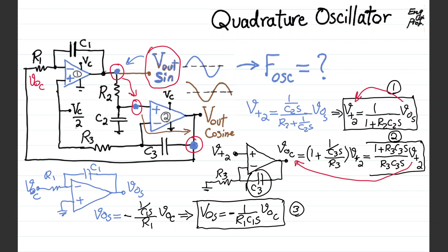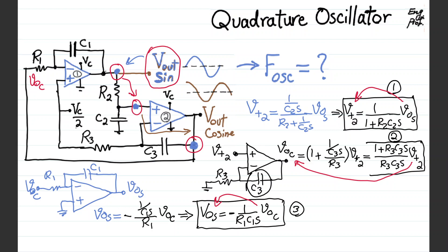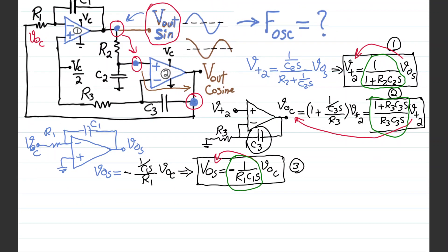Now we have everything at hand. From Vout sine via equation 1 we got to V+2; from V+2 via equation 2 we got to Vout cosine; and via equation 3 we returned to Vout sine — completing the loop. The product of equations 1, 2, and 3 must equal 1, since the loop gain for stable oscillation must equal 1.